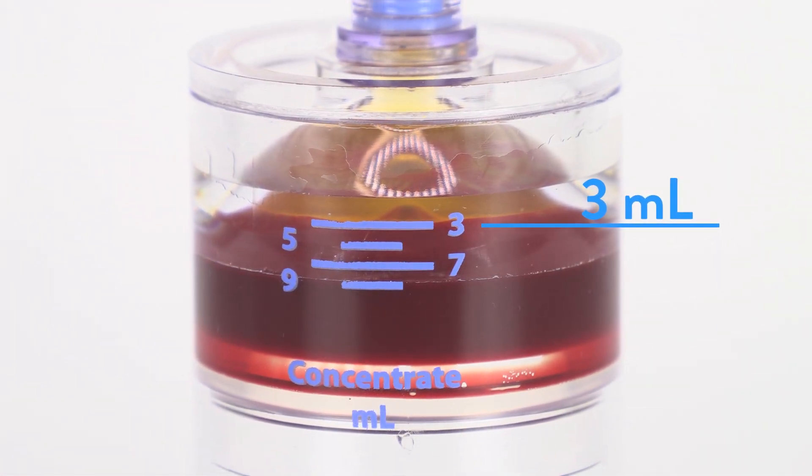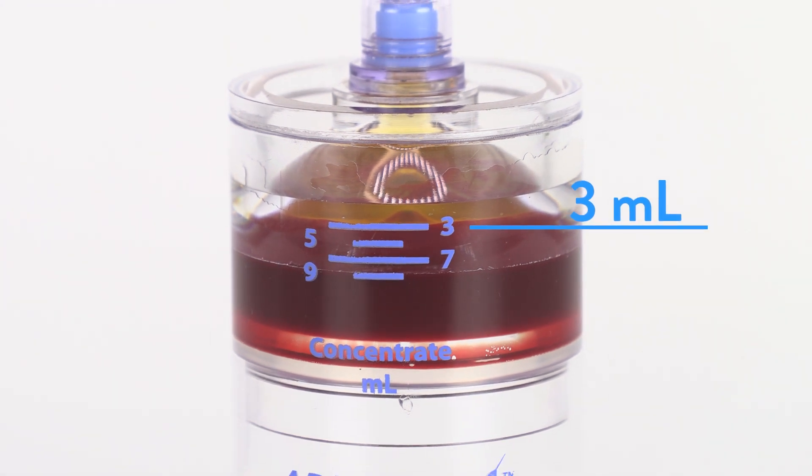Aspirate until the red blood cell interface reaches 3 milliliters or the desired volume marker.